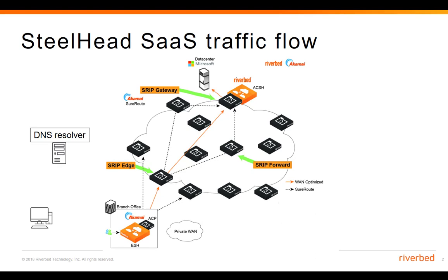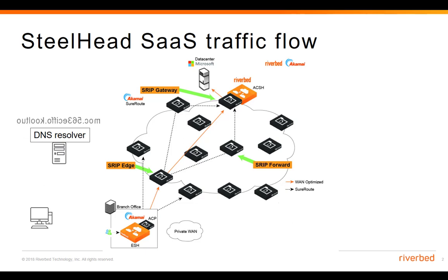Now that we have a high-level overview of all the components, let's see what happens when one user wants to access Office 365. We have a user in the branch office who wants to check his email, so he opens a browser and types outlook.office365.com. The computer will send a DNS request to the local DNS resolver, and the DNS resolver will return the IP address of the requested URL. Once the computer knows which IP address to use, it will send a SYN packet to that server.